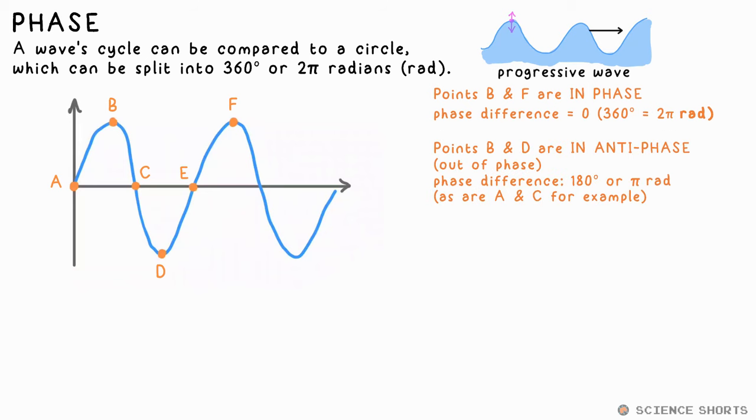Points on opposite sides of a wave are completely out of phase, or we might say in antiphase. They're half a wave out of phase, so their phase difference is 180 degrees or pi radians. These two points are a quarter of a wave out of phase, so that's a phase difference of 90 degrees or pi over 2 radians. We generally don't give phase differences above 180 degrees, pi radians, as we can just give the opposite phase difference, so 270 degrees is just given as 90 degrees, etc.